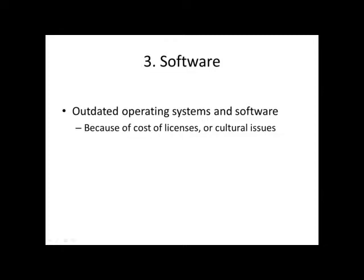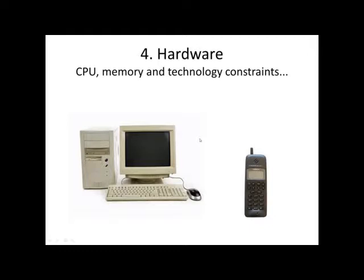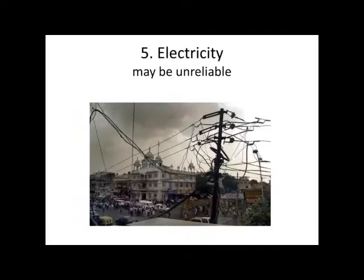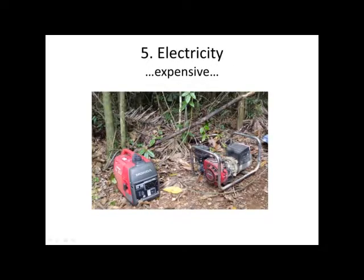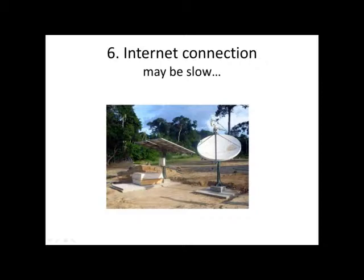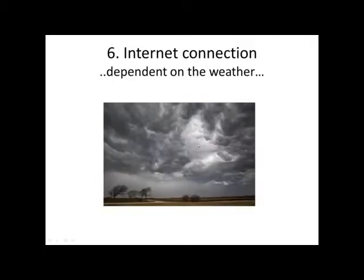Then, of course, there is the software side. We might have outdated operating systems and software, because licenses cost money, or because it's not considered a priority in the culture of the institution. There might also be constraints on the hardware. Even other constraints like electricity might be unreliable, occasionally available, or expensive. The internet connection, which is fundamental, may be slow or dependent on the weather.